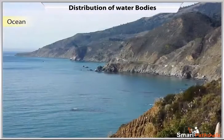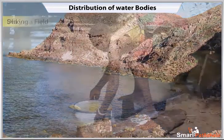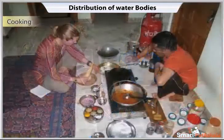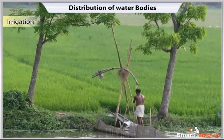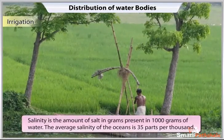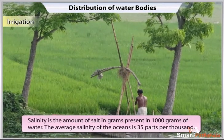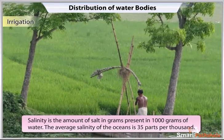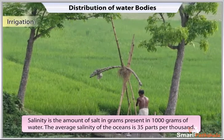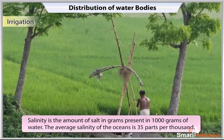Ocean and sea water are not fit for drinking, washing, cooking, irrigation, etc. Salinity is the amount of salt in grams present in 1000 grams of water. The average salinity of the oceans is 35 parts per 1000.